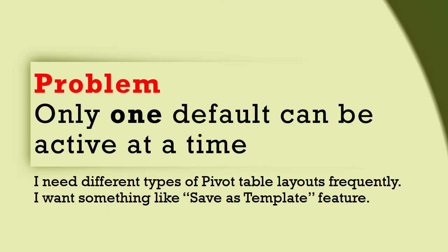This is a very good feature and it is going to save you some manual work, but now you will start thinking further and want more. You can have only one default at a time, but if you think about your day-to-day work, there may be five, seven, or any number of different pivot layouts which you use very frequently. You can only make one of them the default — what about the others?